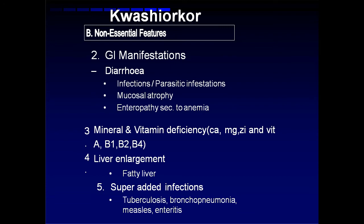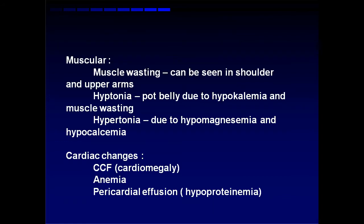Superadded infections occur in the form of tuberculosis, bronchopneumonia, measles, and enteritis, since immunity is reduced and the respiratory system has lost vitamin A and zinc. Muscle wasting is present, though it can be hidden; it is seen more in the shoulder and upper arms. There can be hypotonia, pot belly due to hypokalemia and muscle wasting, and hypertonia due to hypokalemia and hypocalcemia. Cardiac changes include CCF, hypokalemia, anemia, and pericardial effusion due to hypoproteinemia.